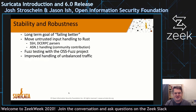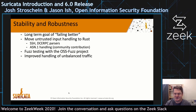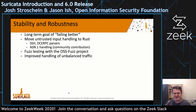For stability and robustness, we have a long-term goal of failing better — meaning more predictable results when things go wrong, such as out-of-memory or bad input scenarios. As part of that, we are moving more of the untrusted input handling to Rust, because it has more predictable failure modes than C. Our SSH and DCE RPC parsers have been rewritten in Rust, as well as the ASN.1 handling, which was a community contribution.